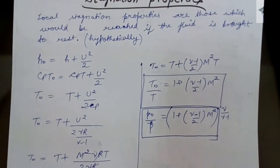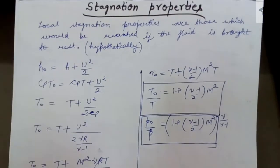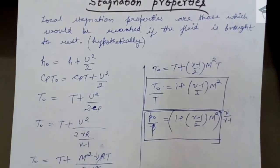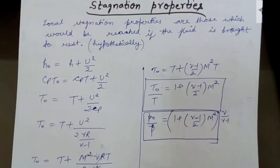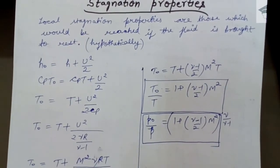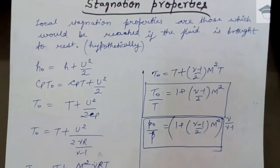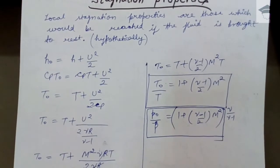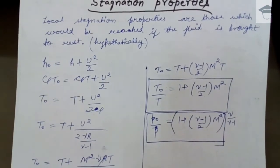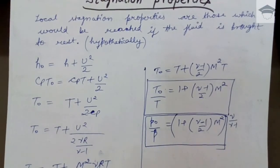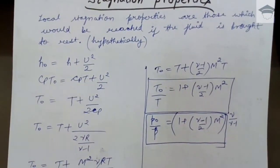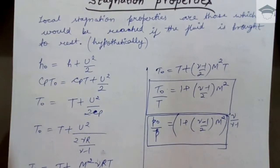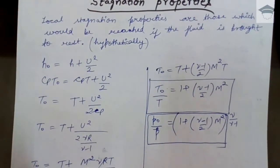Stagnation properties are those properties in a fluid flow which would be reached if the fluid is brought to rest isentropically. When a flowing fluid is brought to rest isentropically, the properties obtained are known as stagnation properties. This is hypothetical — no such process actually exists — but it is theory-based, and many exam questions are set on stagnation properties.